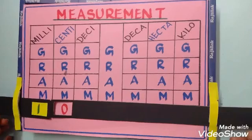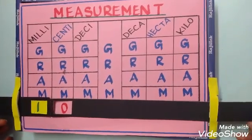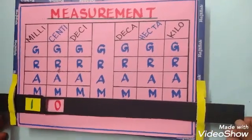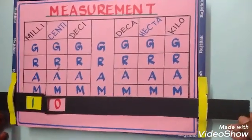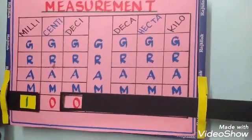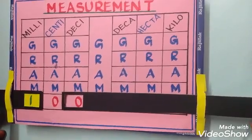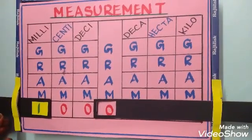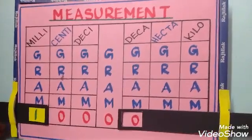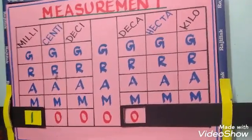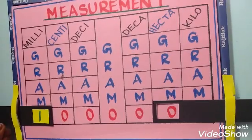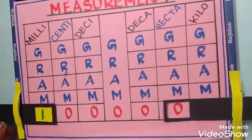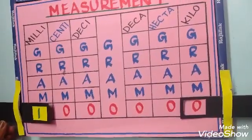How many milligrams is equal to 1 centiliter? It is 10. 10 milligrams is equal to 1 centiliter. 100 milligrams is equal to 1 deciliter. 1000 milligrams is equal to 1 gram. 10,000 milligrams is equal to 1 decagram. 1 lakh milligrams is equal to 1 hectogram. 10 lakhs milligrams is equal to 1 kilogram.